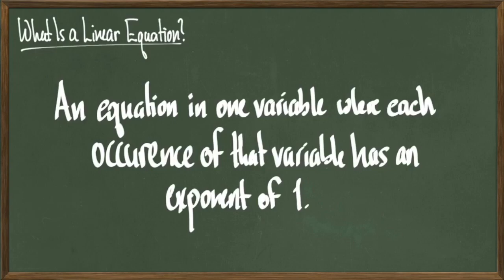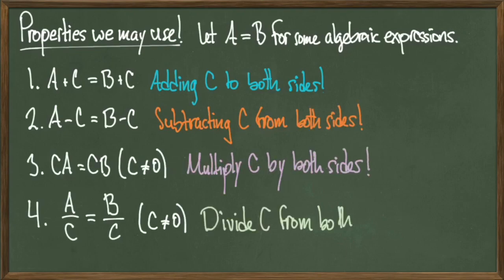Let's go ahead and jump right into some examples. These are properties that are laid out and explained in a previous video of mine called Isolating the Variable, and we're going to use them here as well. The fast version is: if I am given an equation a equals b, then I can take the algebraic expression c and add it, subtract it, multiply it, or divide it on both sides — as long as c is not equal to zero, because I can't divide by zero.